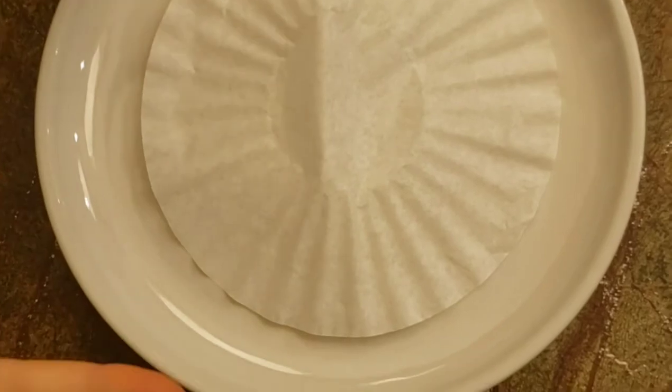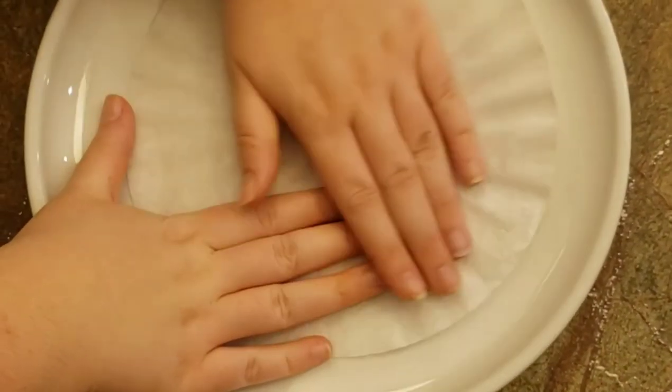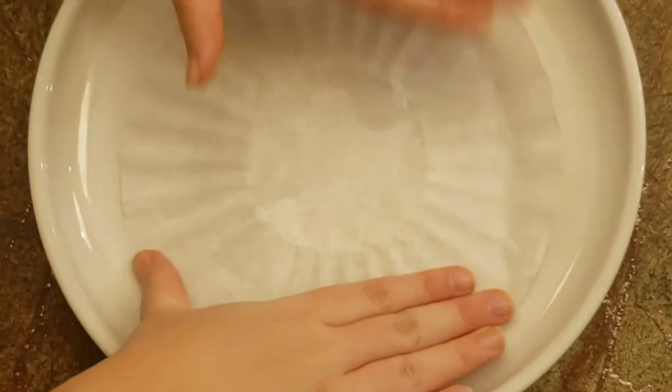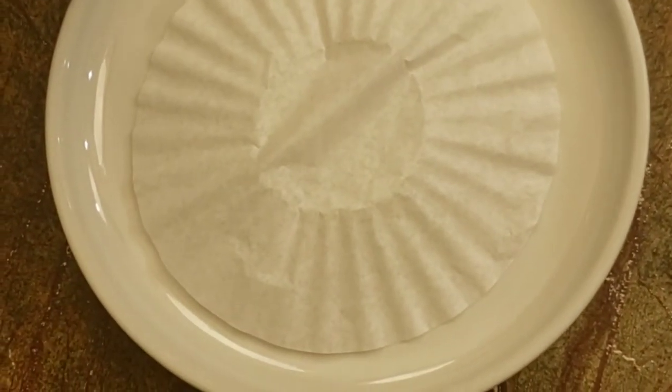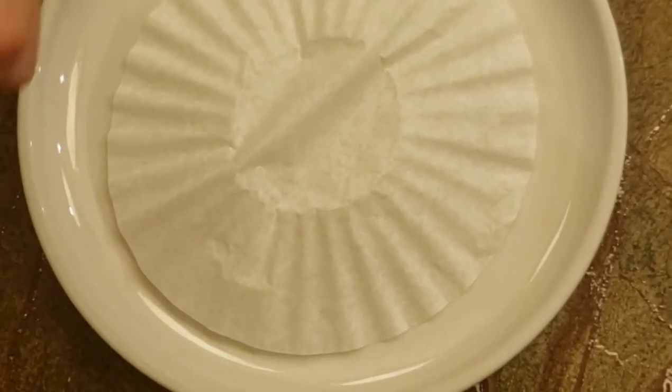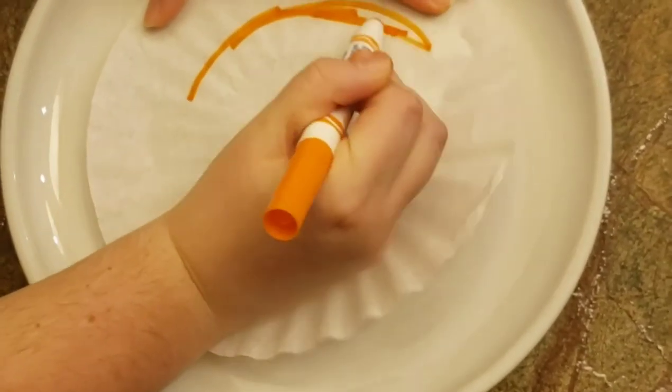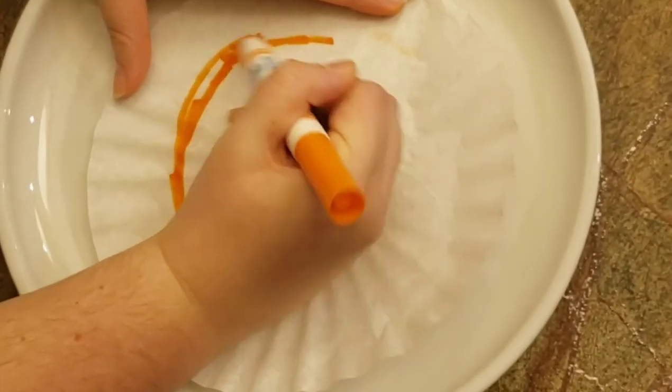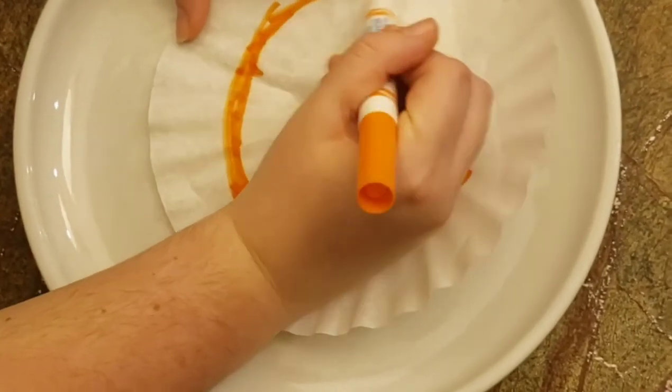For the first step, take your coffee filter and put it on a plate just like I've done, then flatten it out with your hands. Once the coffee filter is flat enough, take two or more colors of your choice. Then scribble lines around the inside of it. Make sure these lines are thick so when you pour the water on it, the color doesn't wash away.